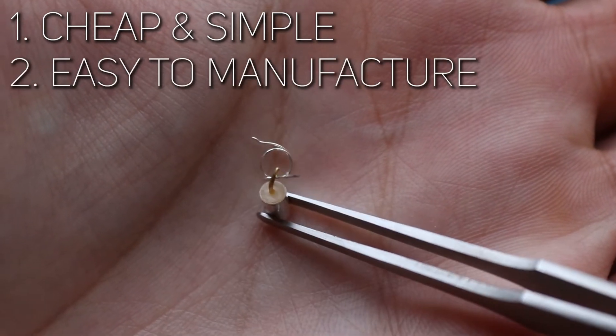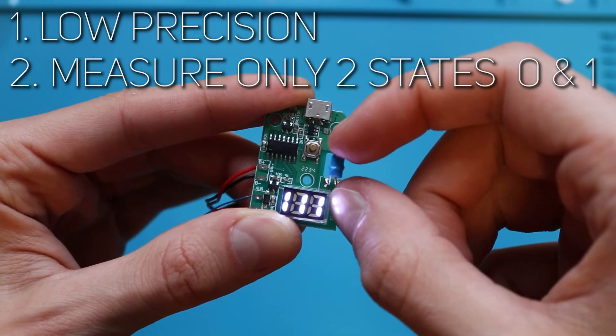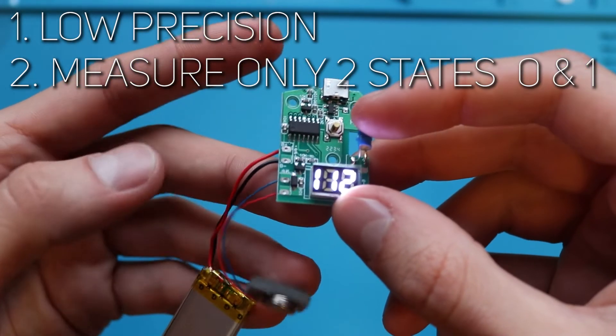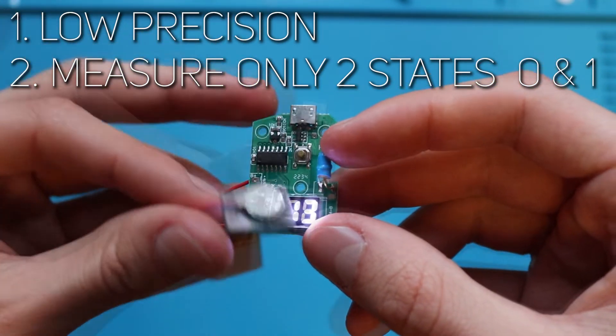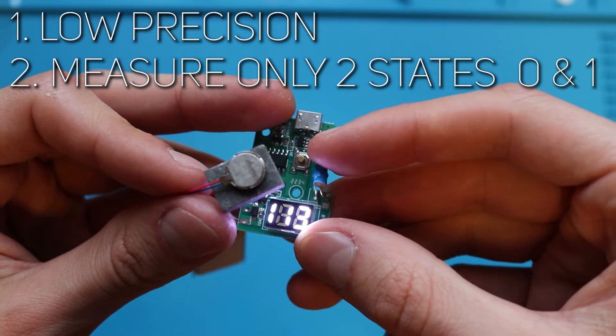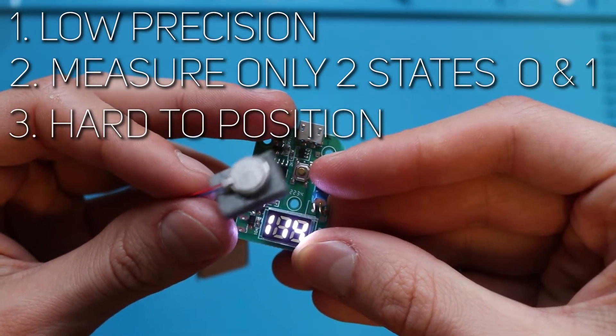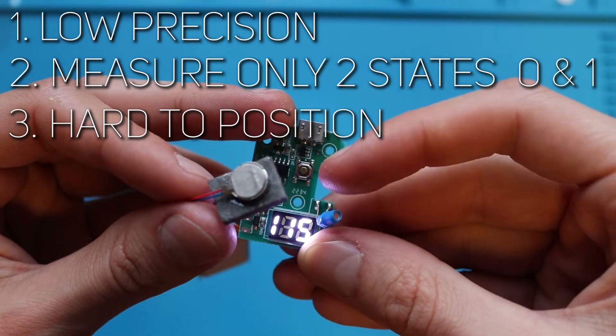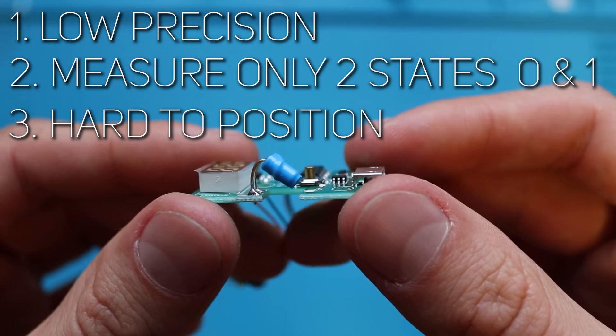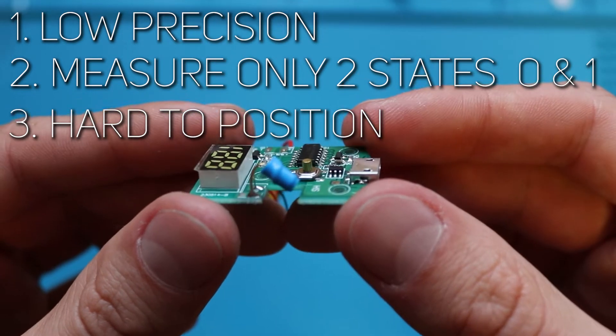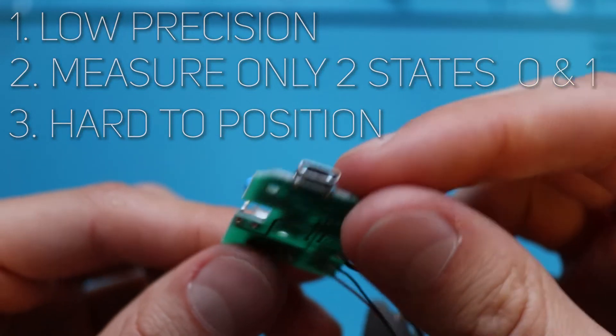But from the other side, it has its own drawbacks. It's not precise at all. Second, it's possible to measure only two states, whether this sensor is tilted more than some angle or less. Also because it's in a case with metal leads, its positioning is complicated in order to achieve the desired angle. Remember how easy it was to trigger it by just moving? That means that after assembling, such a sensor must be calibrated by bending its leads in a specific way. But still, even after calibrating, I don't think that high precision can be achieved.